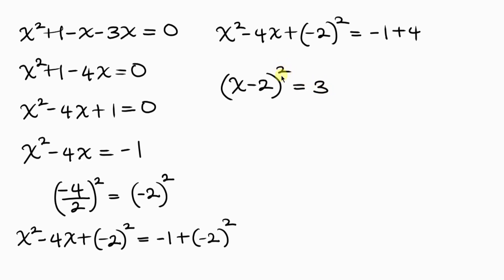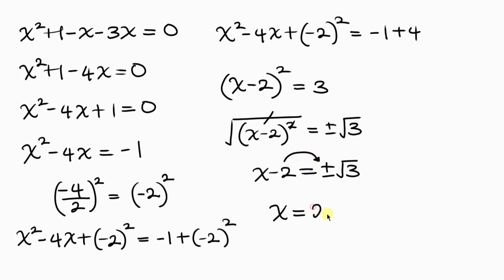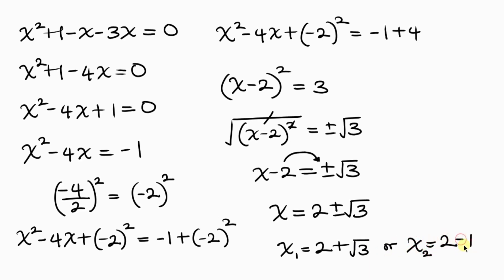To get rid of the square, we take the square root of both sides: the square root of x minus 2 squared equals plus or minus the square root of 3. The square root cancels the square, leaving x minus 2 equals plus or minus the square root of 3. Moving negative 2 to the right, it becomes positive 2, so x equals 2 plus or minus the square root of 3. There are two values of x: x equals 2 plus the square root of 3, or x equals 2 minus the square root of 3.